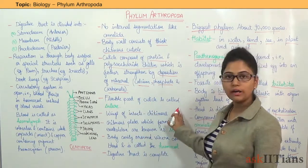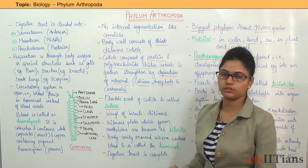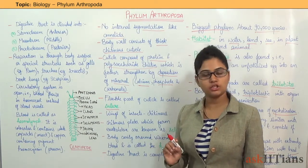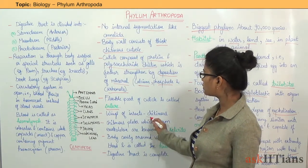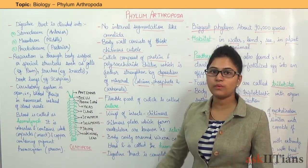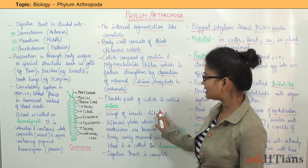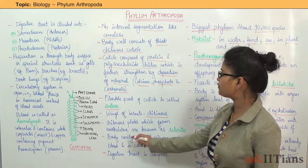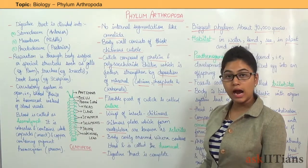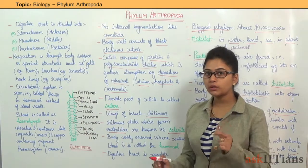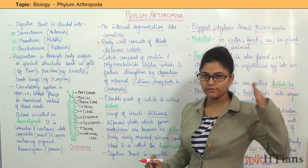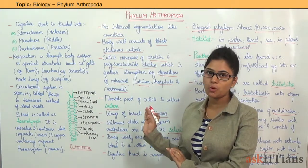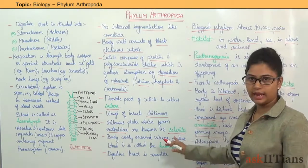The flexible part of the cuticle is called a suture. The wings of insects are also chitinous — they have chitinous wings. Chitinous plates which form the exoskeleton are known as sclerites.